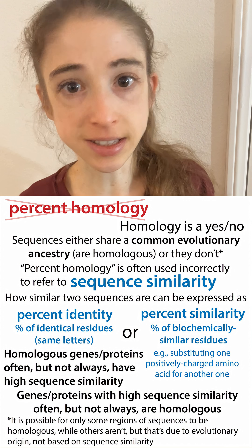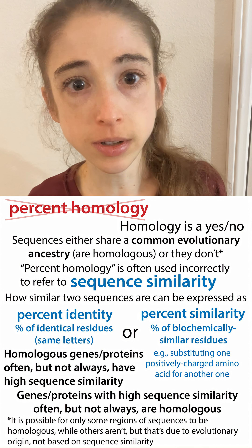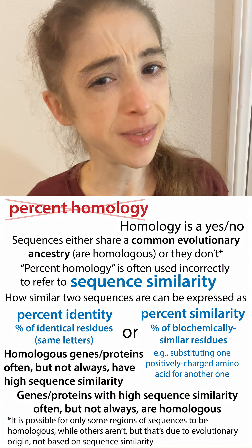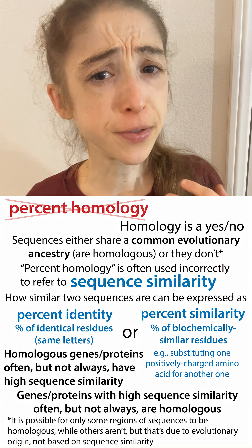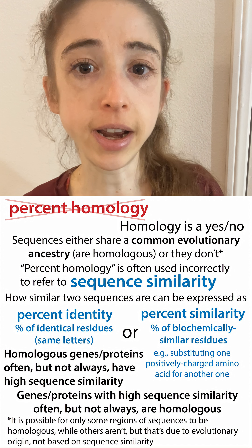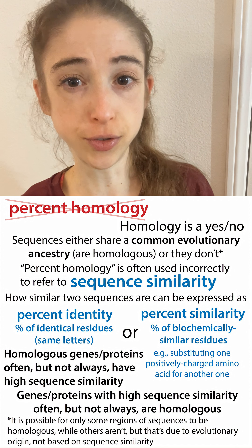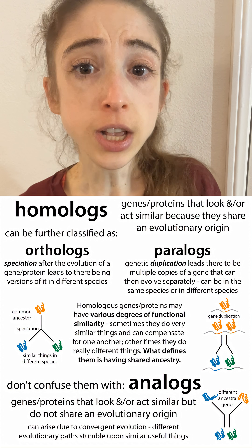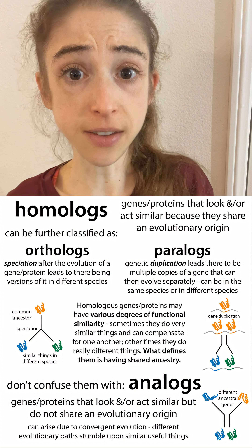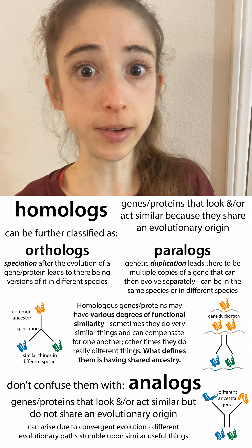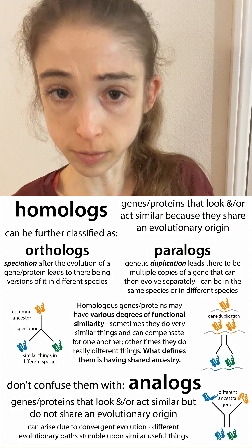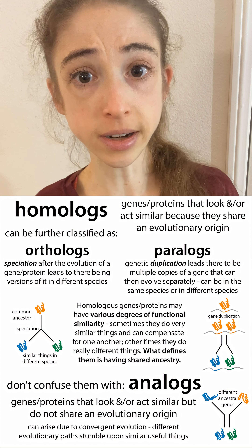Homology is either a yes or a no, so referring to percent homology is a major no-no. Homology refers to whether two things are evolutionarily related — did they share a common origin and then diverge from there? So if we are comparing two proteins to see if they came from the same place, the question is: are they homologous? And the answer is yes or no.